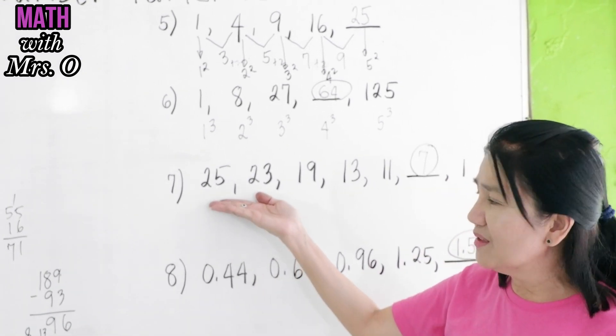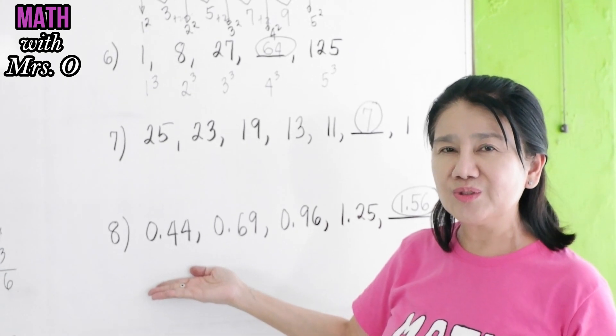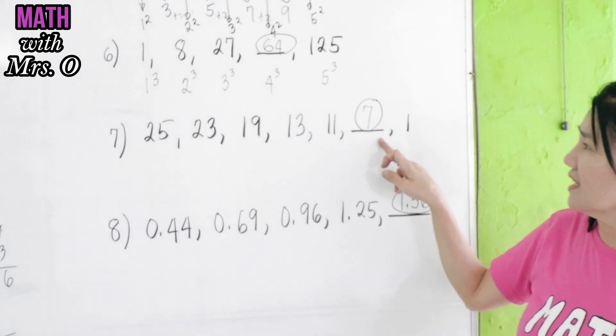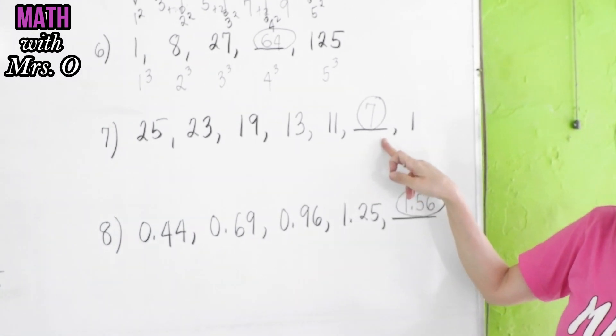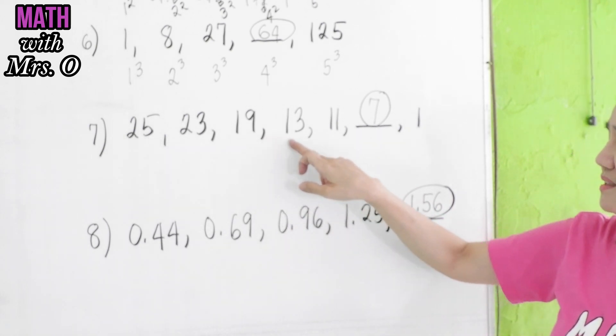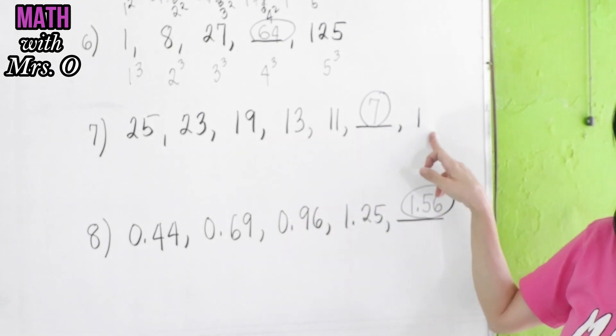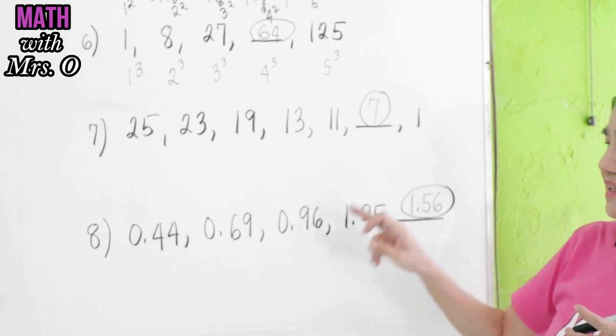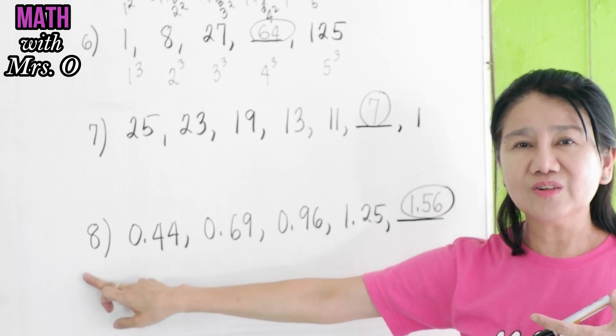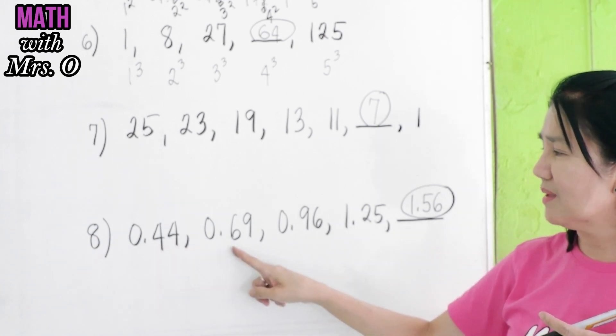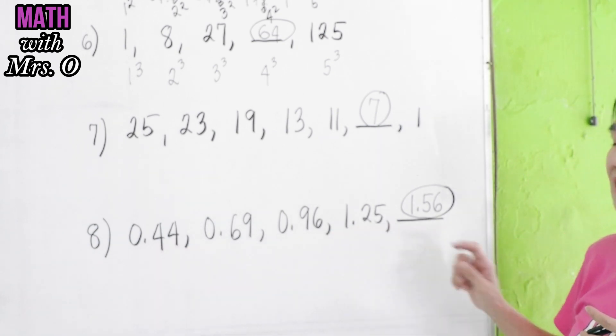I will be leaving number 7 and 8 for you to answer as an exercise. I already provided the answer here. Take note that in number 7, the numbers are decreasing. So if they are decreasing, one hint is for you to subtract a given number. And then in number 8, I also provided an exercise for you, but this time, I made this decimals. So you try to see the pattern.